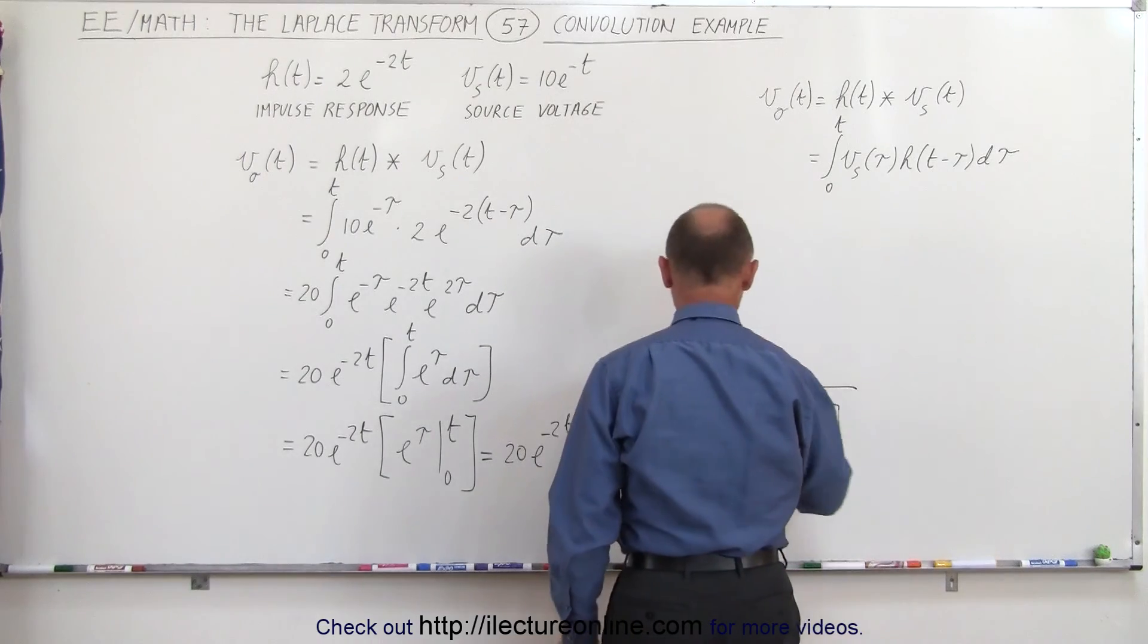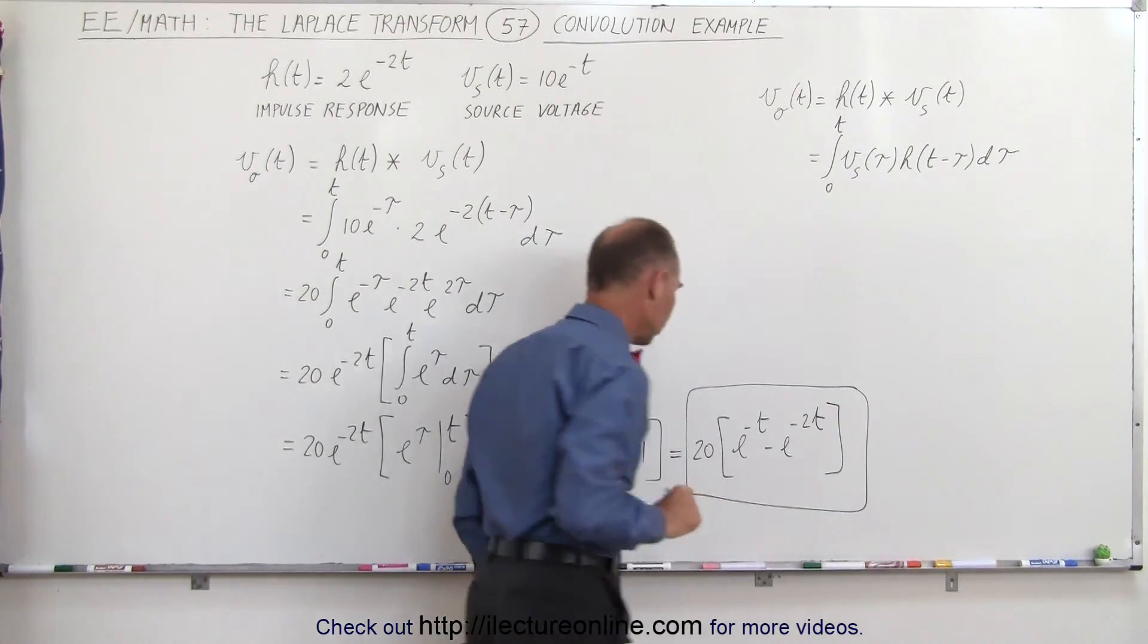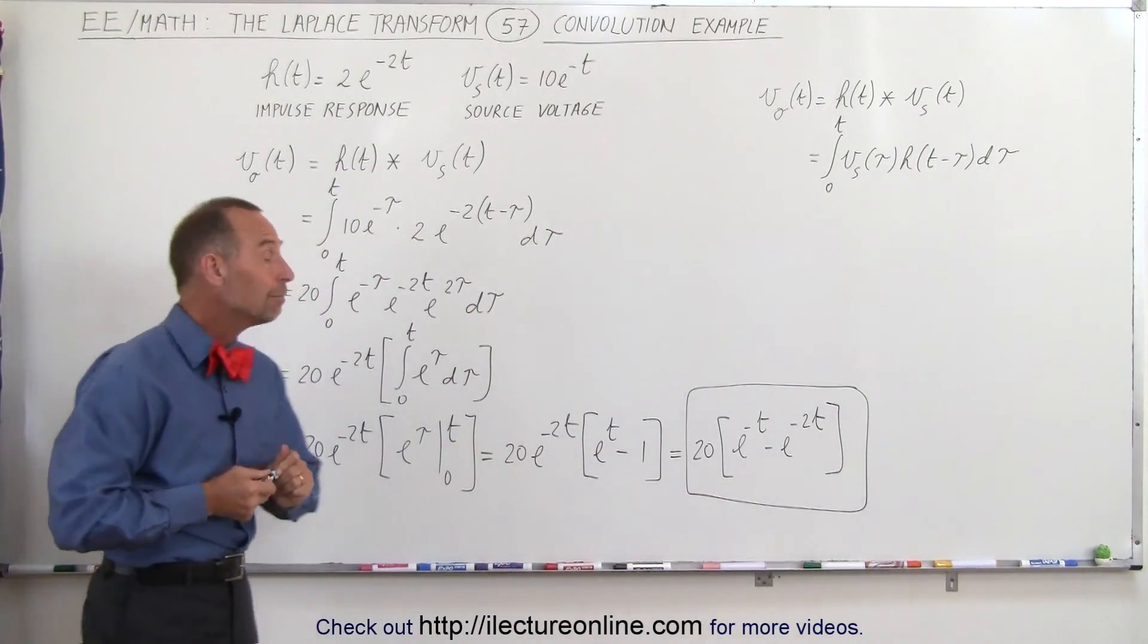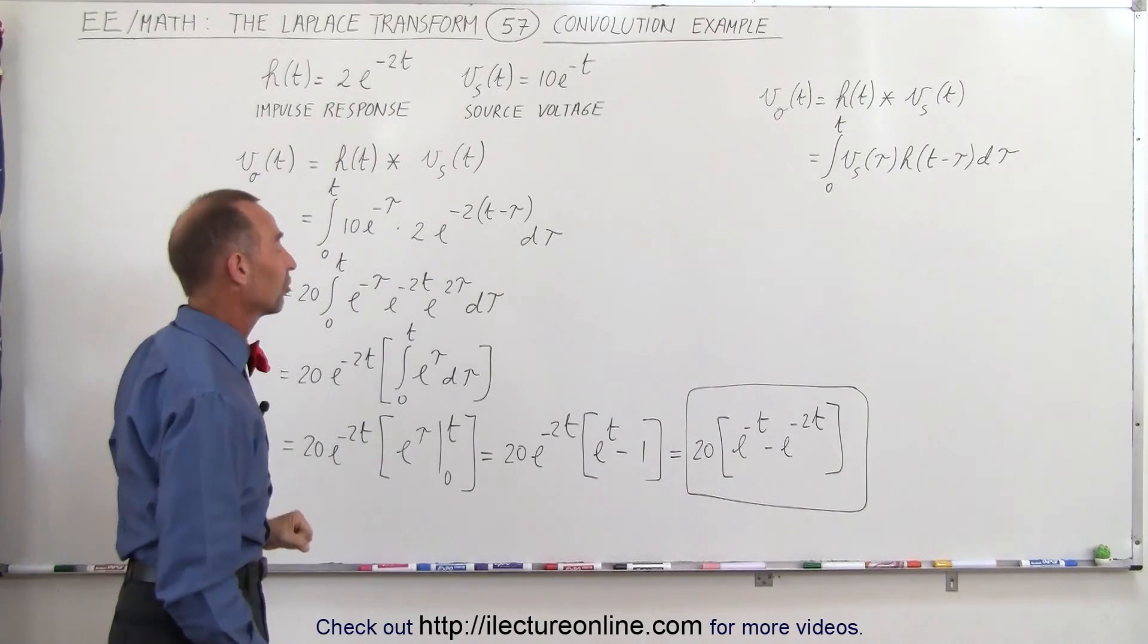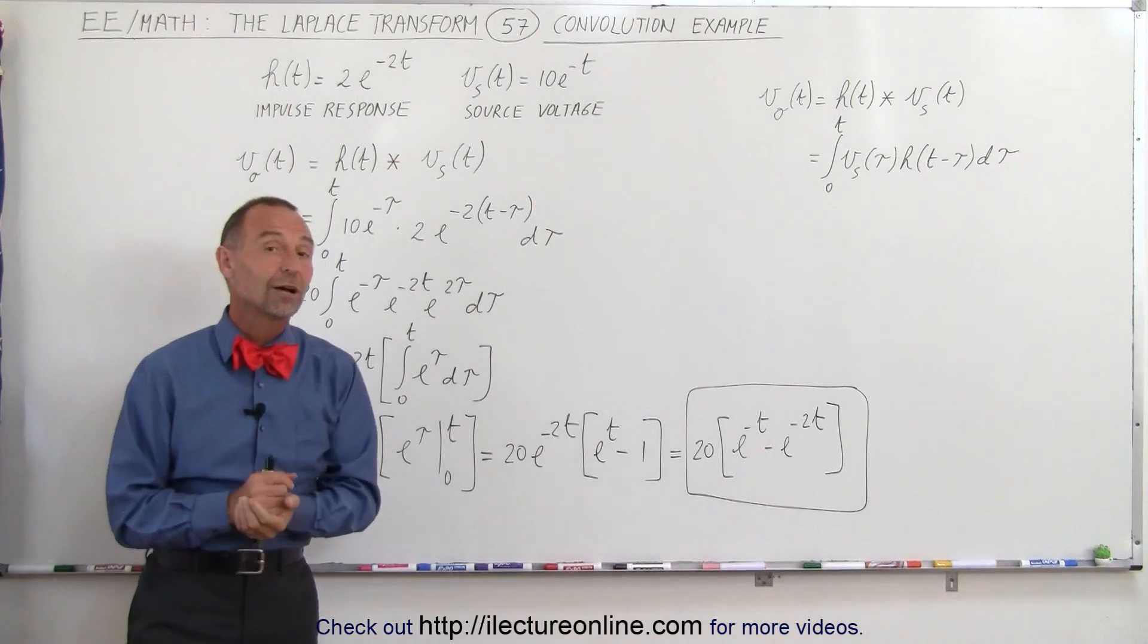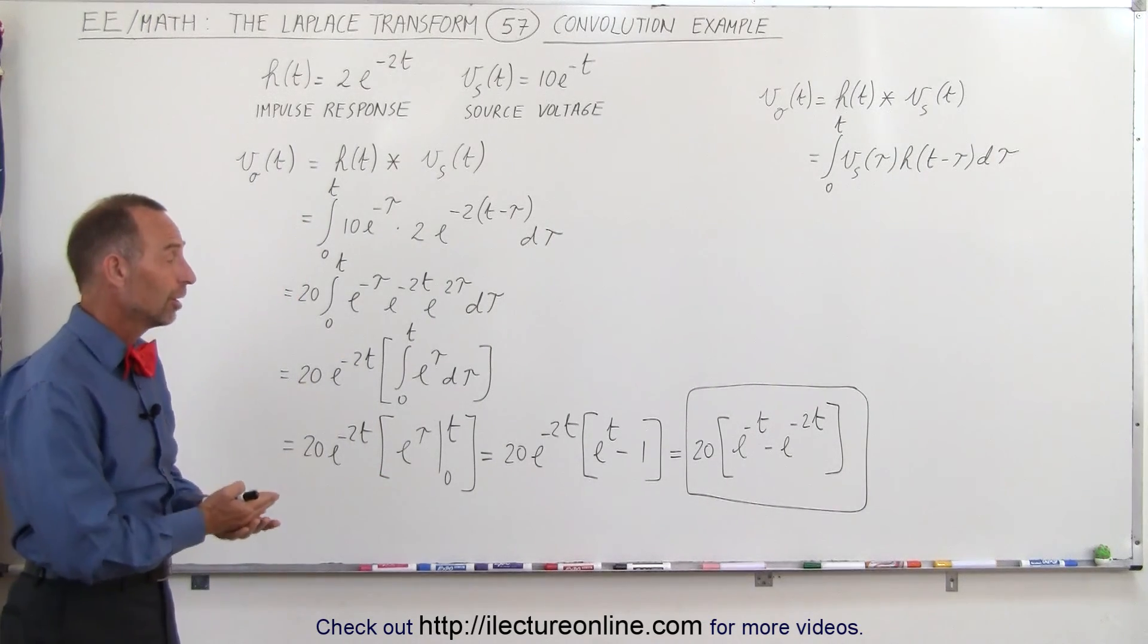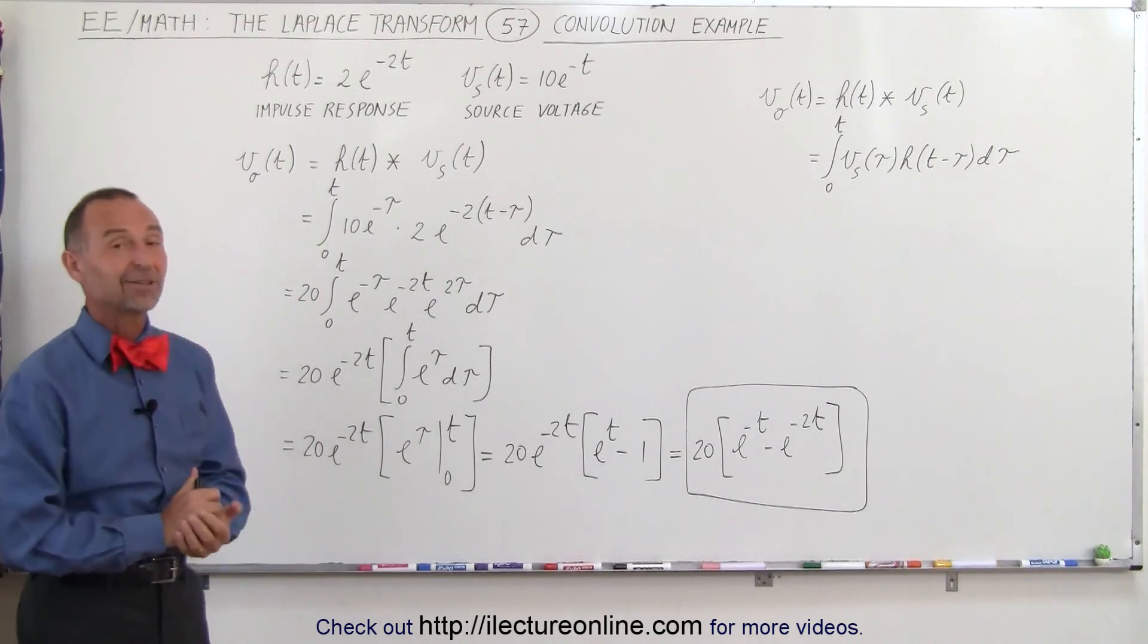And that's probably the most simplified form in which we could write the solution, and that would be the output voltage relative to the input voltage and the impulse response of the circuit. And so that's how we use the convolution to find the result of a problem like this. And that's how it's done.